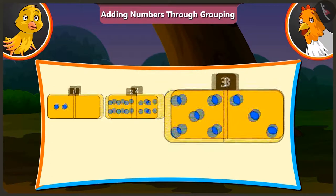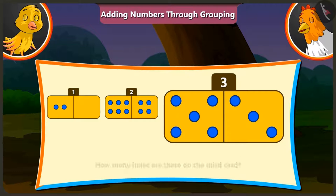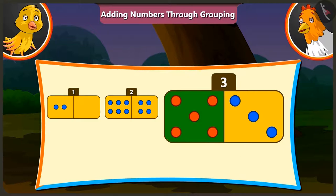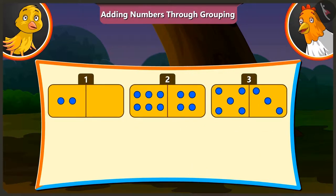Now tell me the number of holes on the third card. The third card has 5 and 3 holes. If we add 3 to 5, we get 8 holes. You are right.